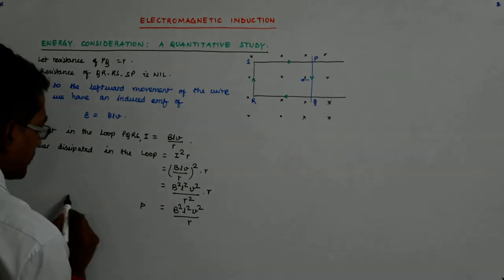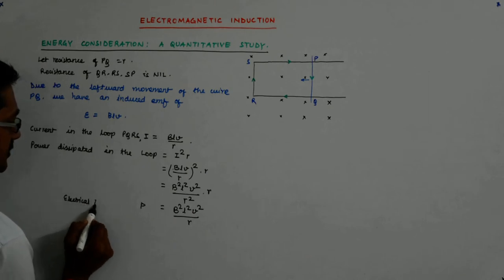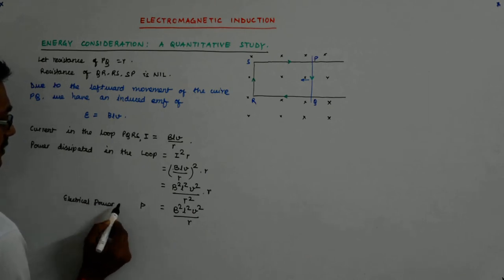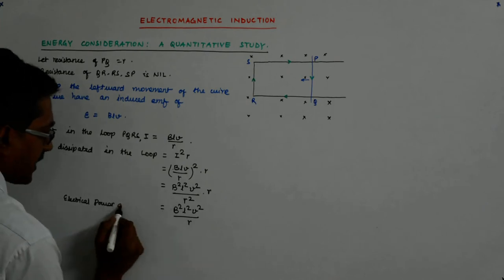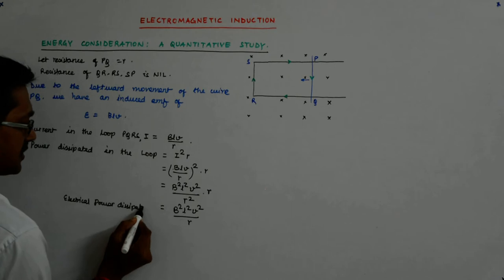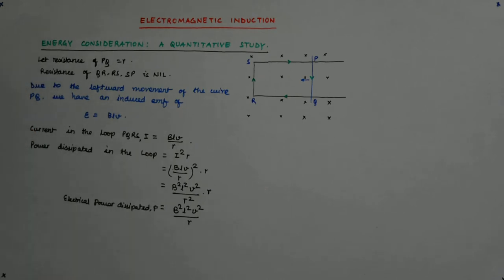So, this is the power dissipated. And what is this? What is this power? This is electrical power dissipated.